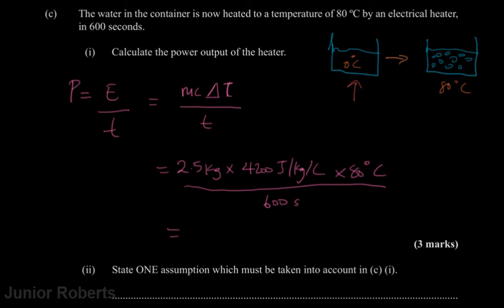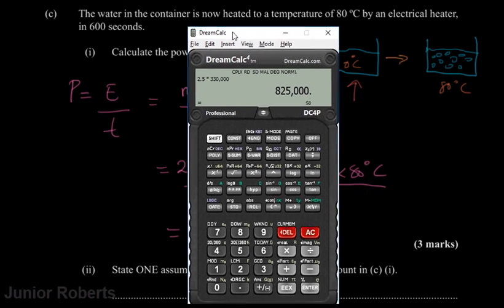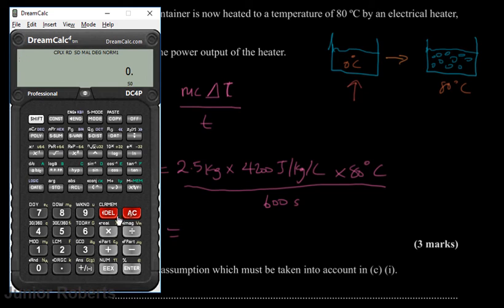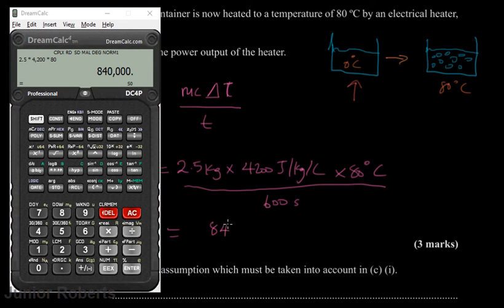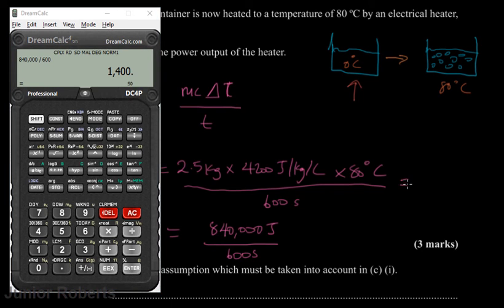Calculating the numerator: 2.5 × 4200 × 80 = 840,000 joules. Dividing by 600 seconds gives 1400 watts. So the power output of the heater is 1400 watts.